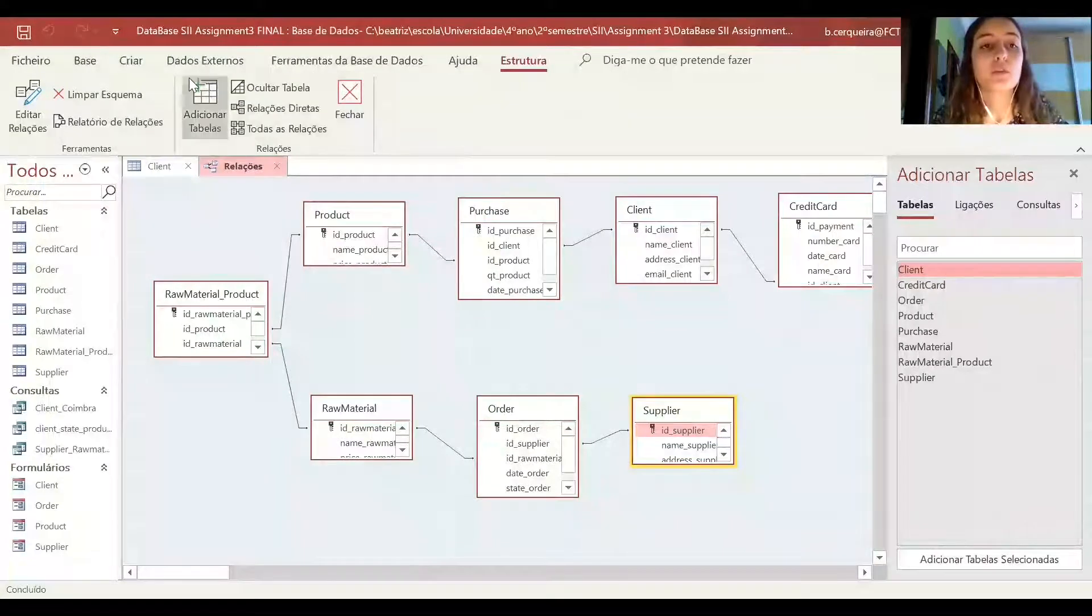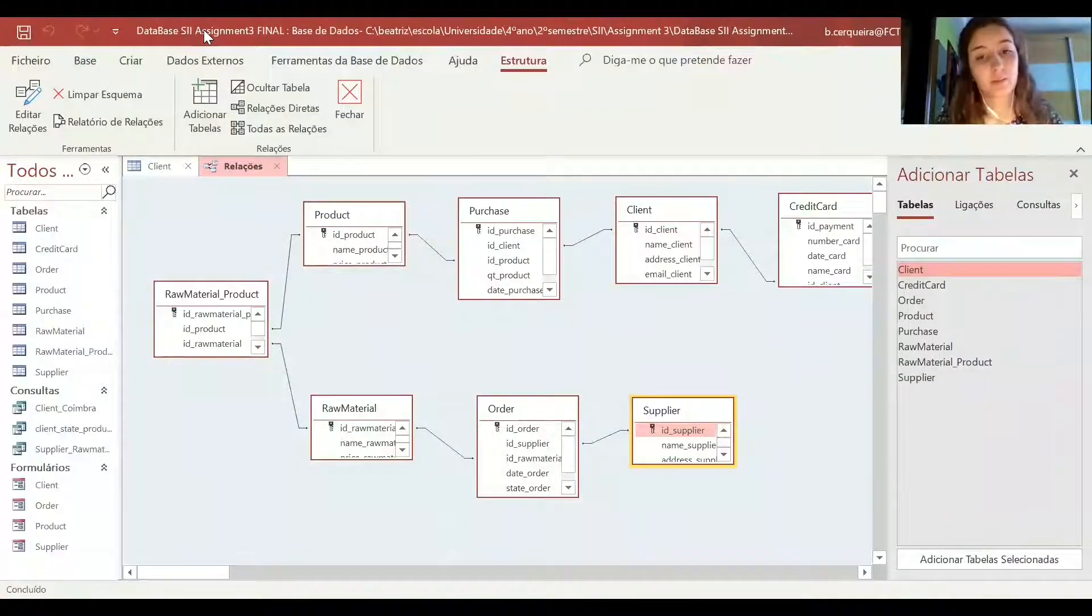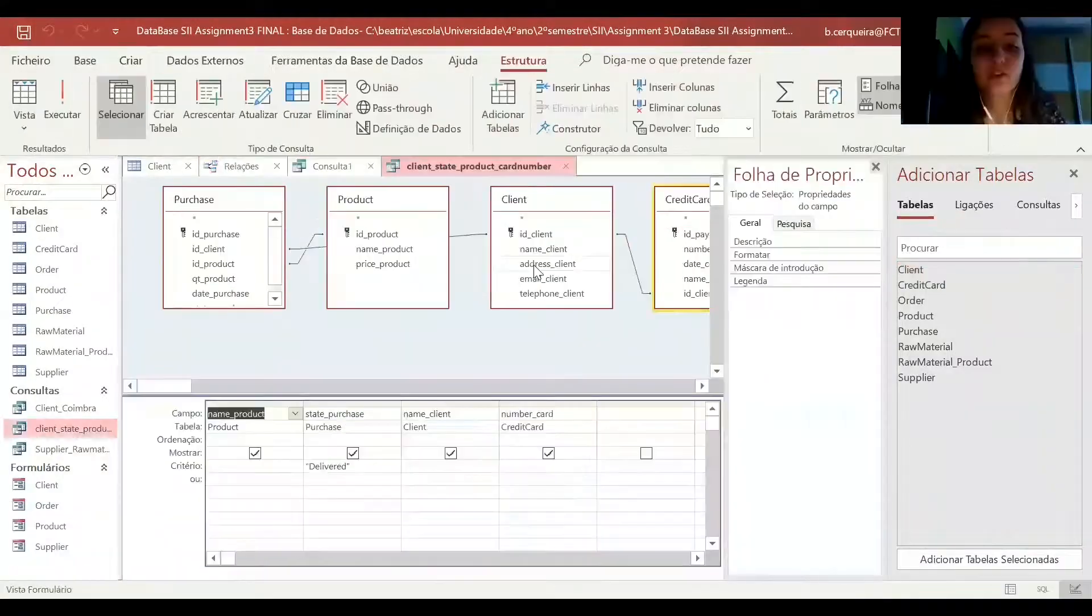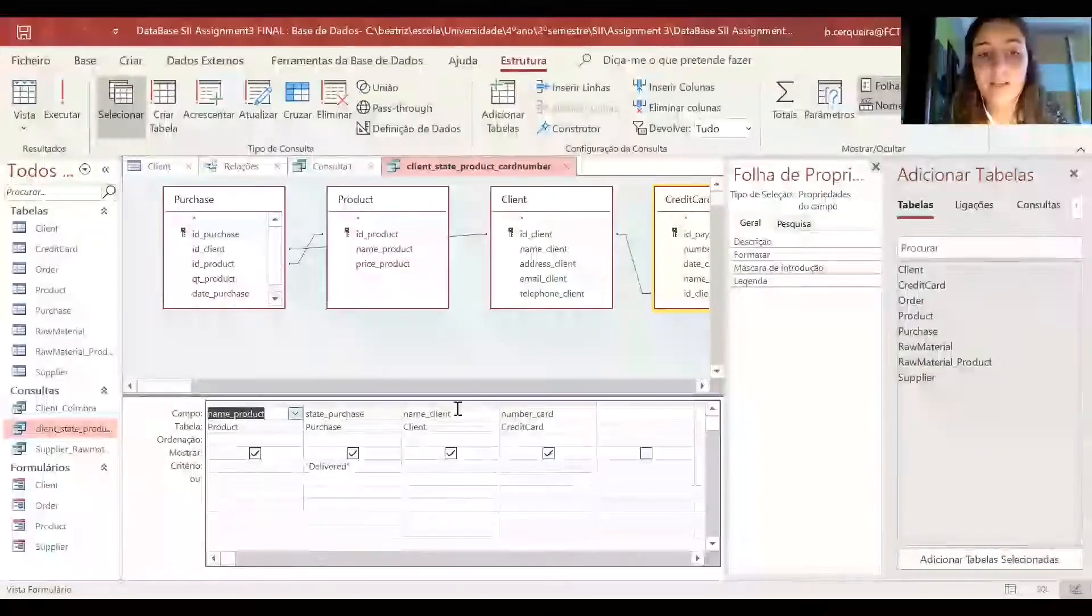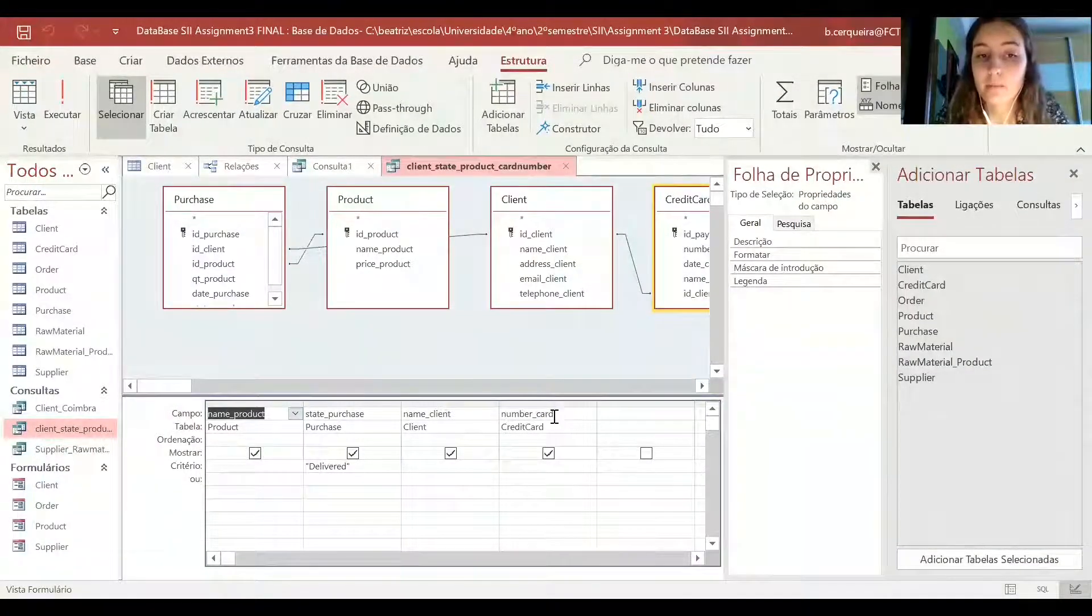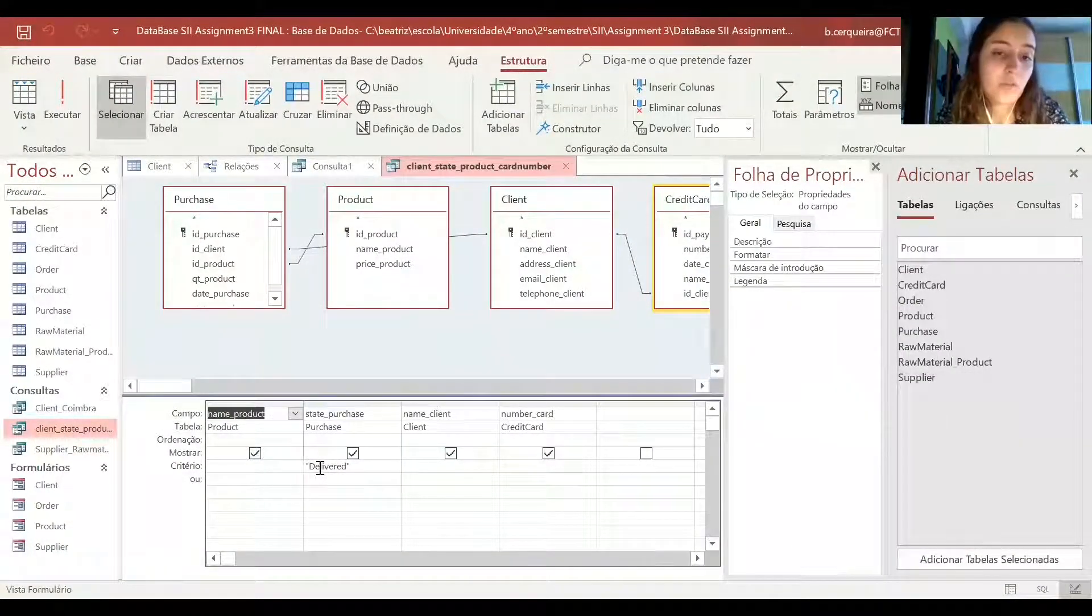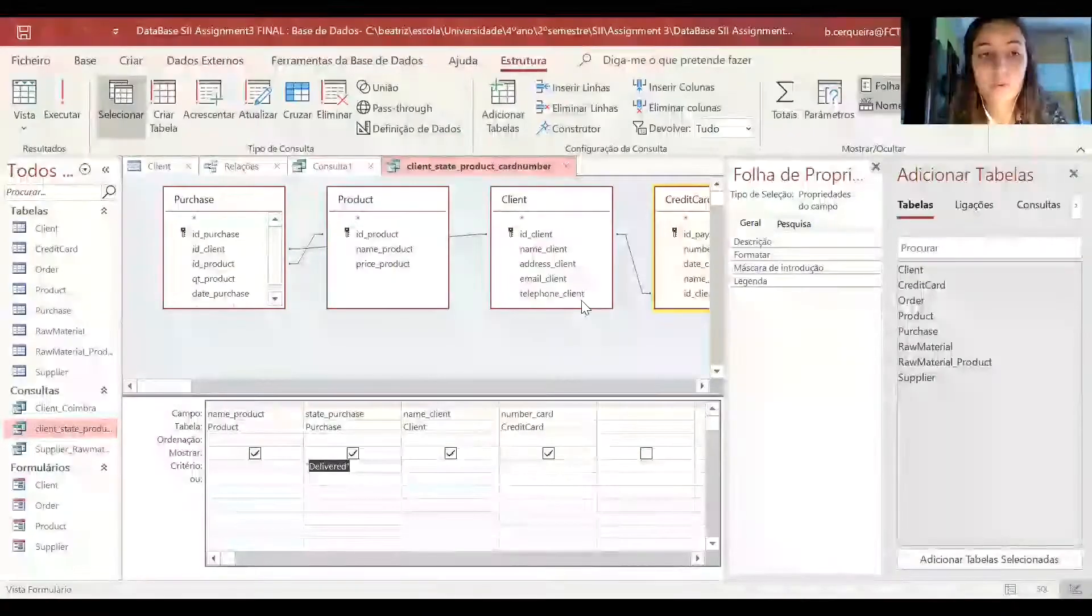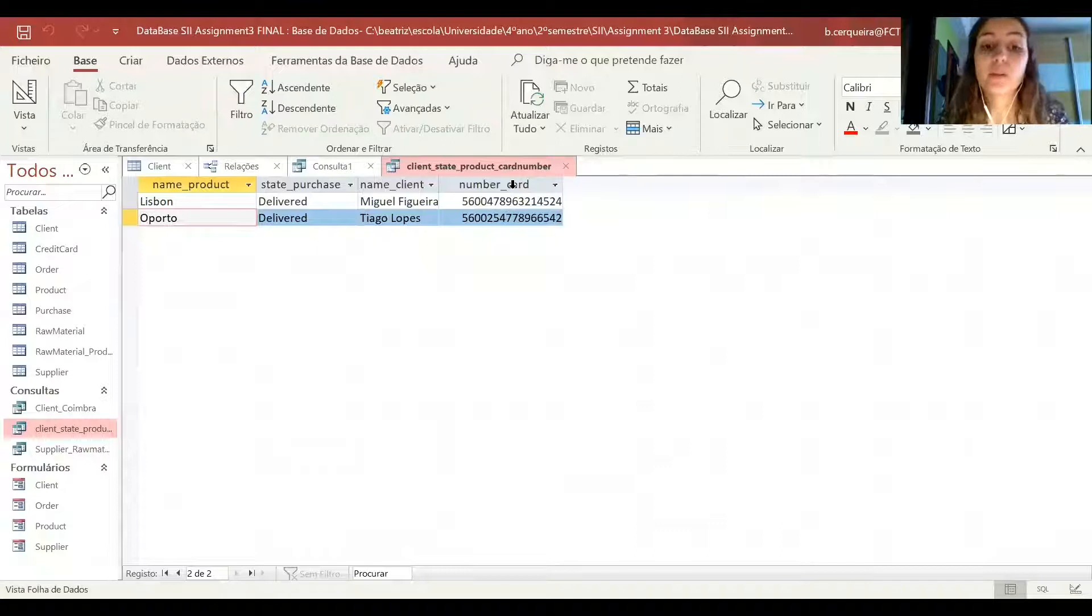Then we moved on to creating the queries which are basically a request for data or information from the database tables. So you go to the create separator and choose query design. We chose to have the name of the product, the purchase state, the client's name and their credit card number and the criteria field was the delivery state of purchase and this allowed us to see which product was delivered to which client and their credit card number and this is really useful, for example, in situations of returns or refunds.